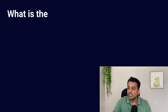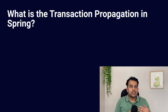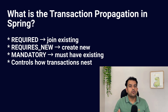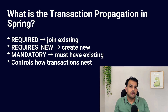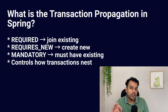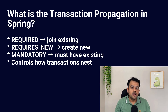What is transaction propagation in Spring? Transaction propagation defines how a method behaves if a transaction already exists. We use keywords like REQUIRED, REQUIRES_NEW, and MANDATORY. REQUIRED will reuse the current transaction, whereas REQUIRES_NEW will suspend the old one and start a new transaction. MANDATORY requires an existing transaction — otherwise it fails. Most real projects use REQUIRED and REQUIRES_NEW.